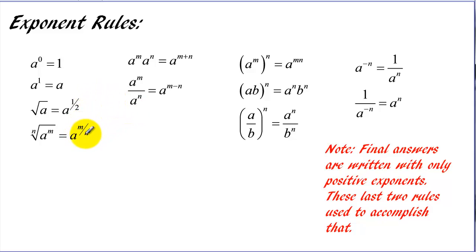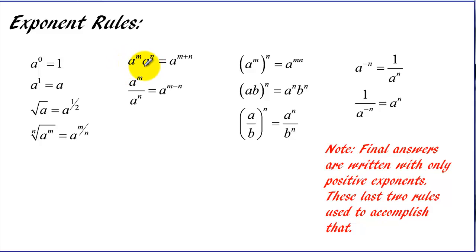In all these problems, m and n can be any real number — integers, fractions, decimals, etc. The next two rules are some of the most commonly used. If we're multiplying two things, the critical thing is both bases have to be the same — like x and x, or 5 and 5. If the bases are different, this rule does not apply. To multiply two things with exponents, we add the exponents. To divide two things with exponents, we subtract the exponents.